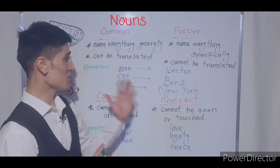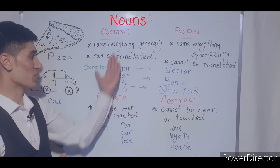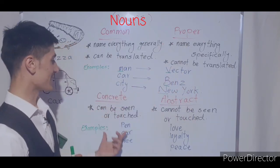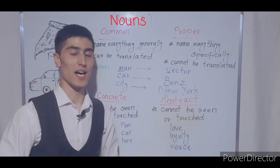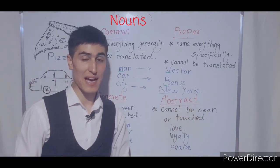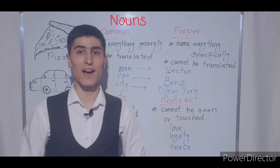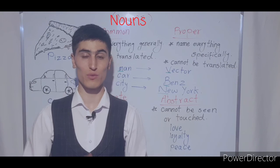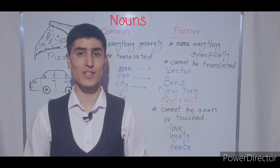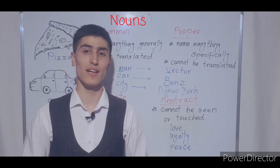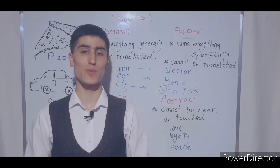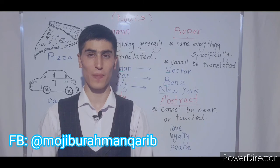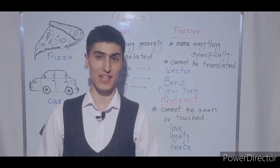That's it for today. Today we talked about four types of noun: common noun, proper noun, concrete noun, and abstract noun. If you have any question or problem, you can comment in the comment section — I will surely read your comments and answer your questions. If you want to learn more, please subscribe to my YouTube channel and like my Facebook page. See you in the next video.